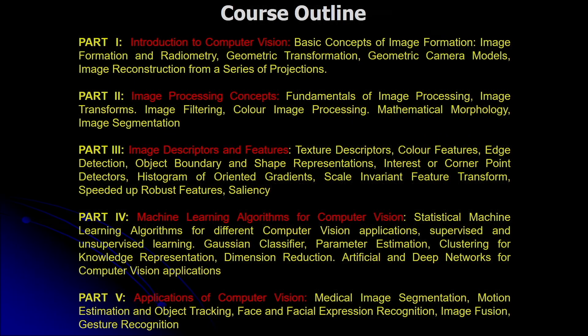The course outline: Part 1 is introduction to computer vision, covering the basic concept of image formation, radiometry, geometric transformation, geometric camera models, and image reconstruction from a series of projections. Part 2 is image processing concepts, covering fundamentals of image processing, image transforms, image filtering, color image processing, mathematical morphology, and image segmentation.